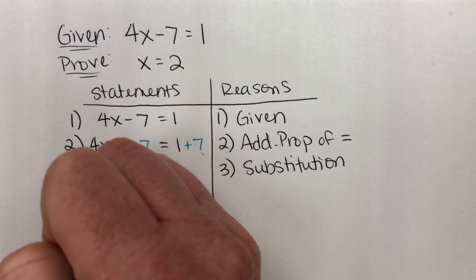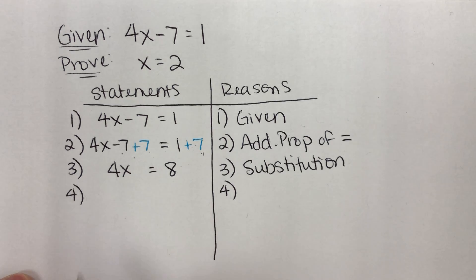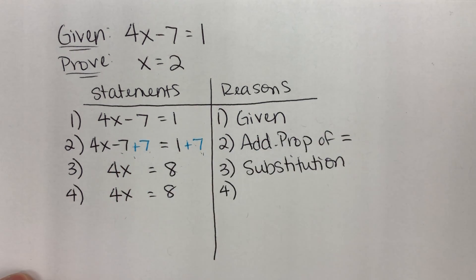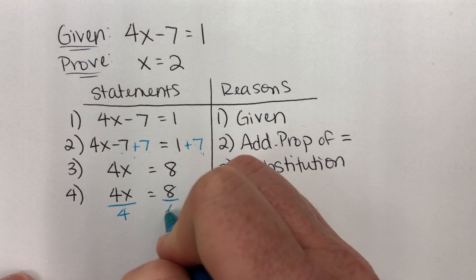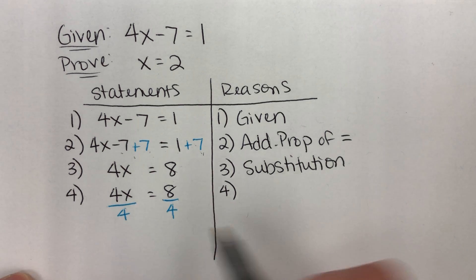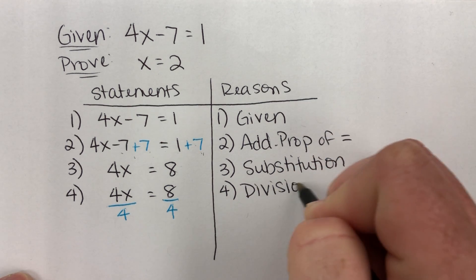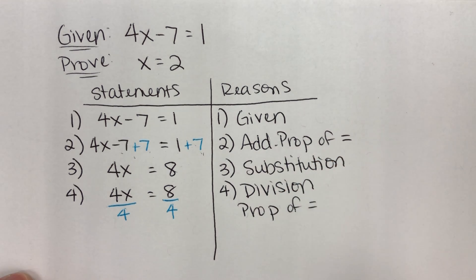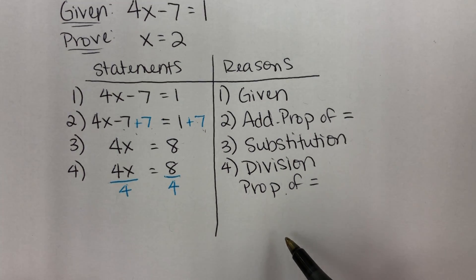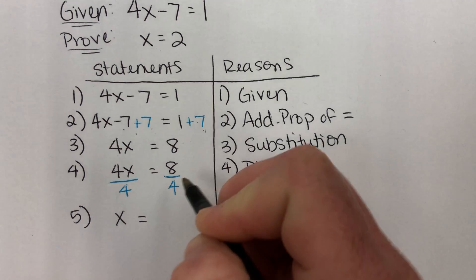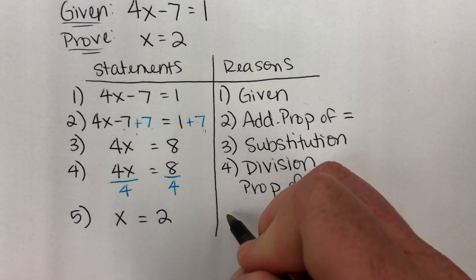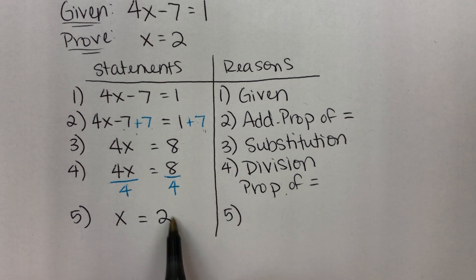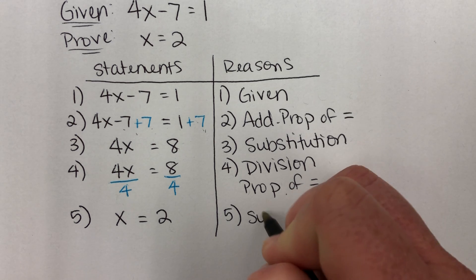What's the next thing I need to do to get x by itself? Next thing I need to do is get rid of this 4. So how do I get rid of that 4? I need to divide by 4. And whatever I do on one side of my equal sign, I have to do to the other. Why do I have to divide both sides? Because of the division property of equality. Another one of your properties there that you have to use in Lesson 2-6. Division property of equality says that whatever I divide one side of an equation by, I have to divide the other side by the same thing. And so the last thing that's left for me to do is then simplify. So these 4s cancel and I'm left with x equals 8 divided by 4 is 2. And what was the reason? What allowed me to rewrite this from this previous step? I simplified, so that's always substitution.